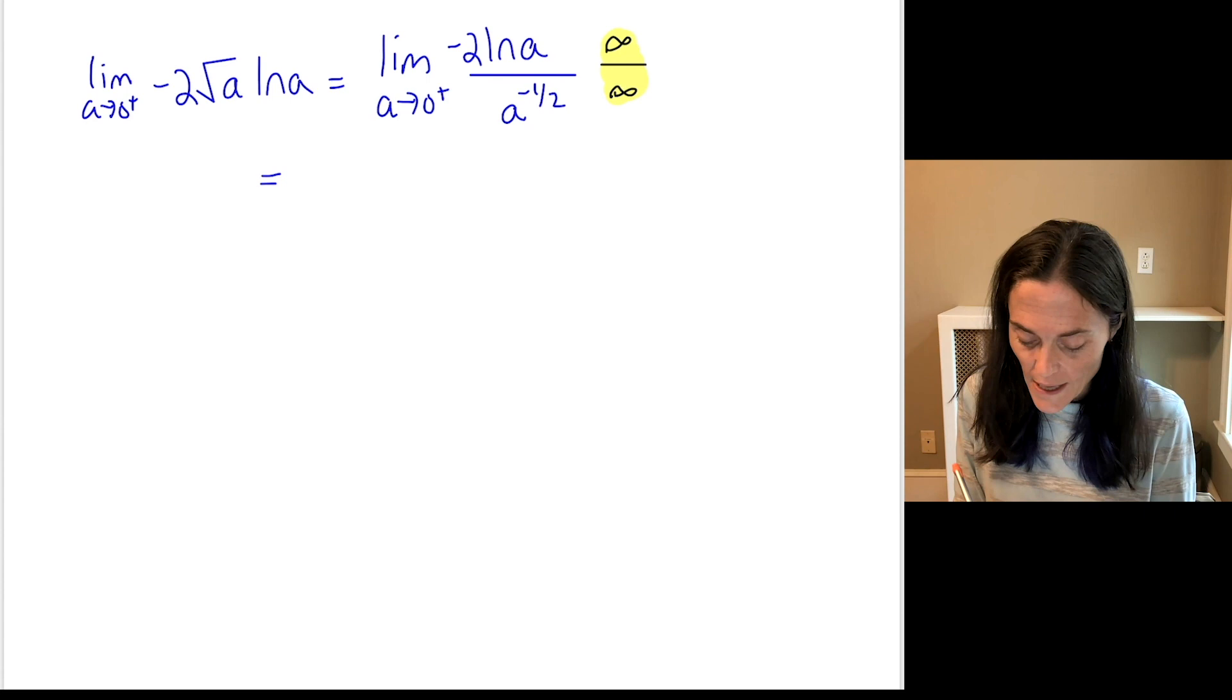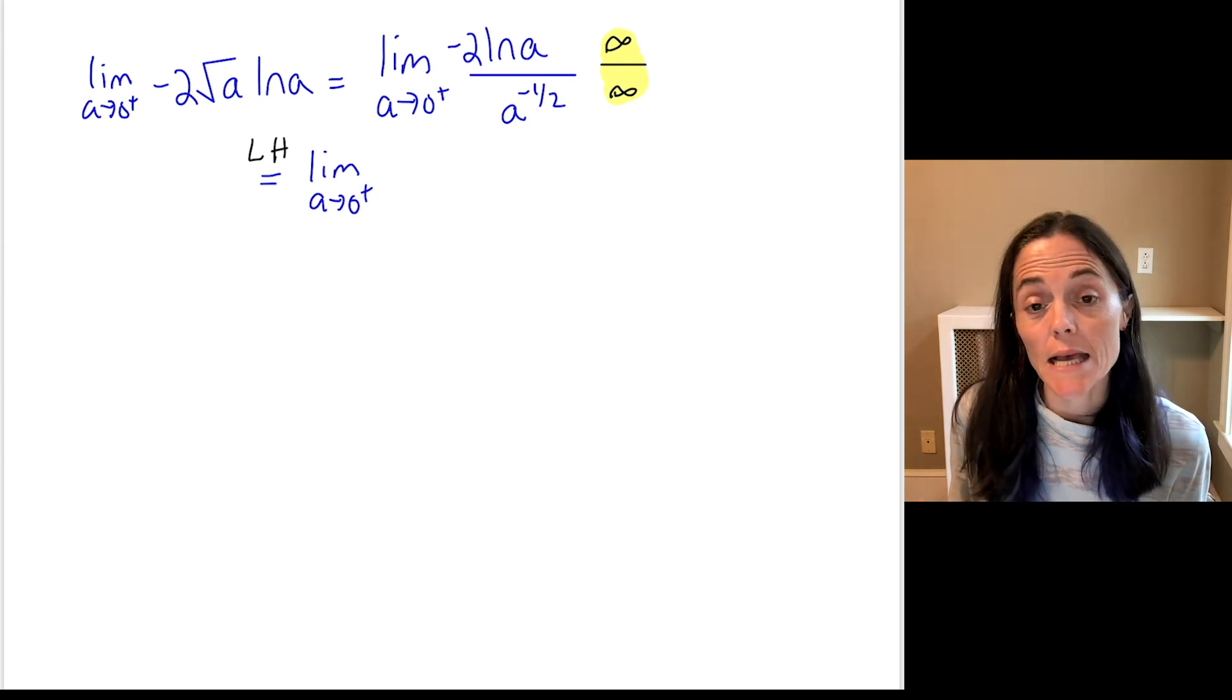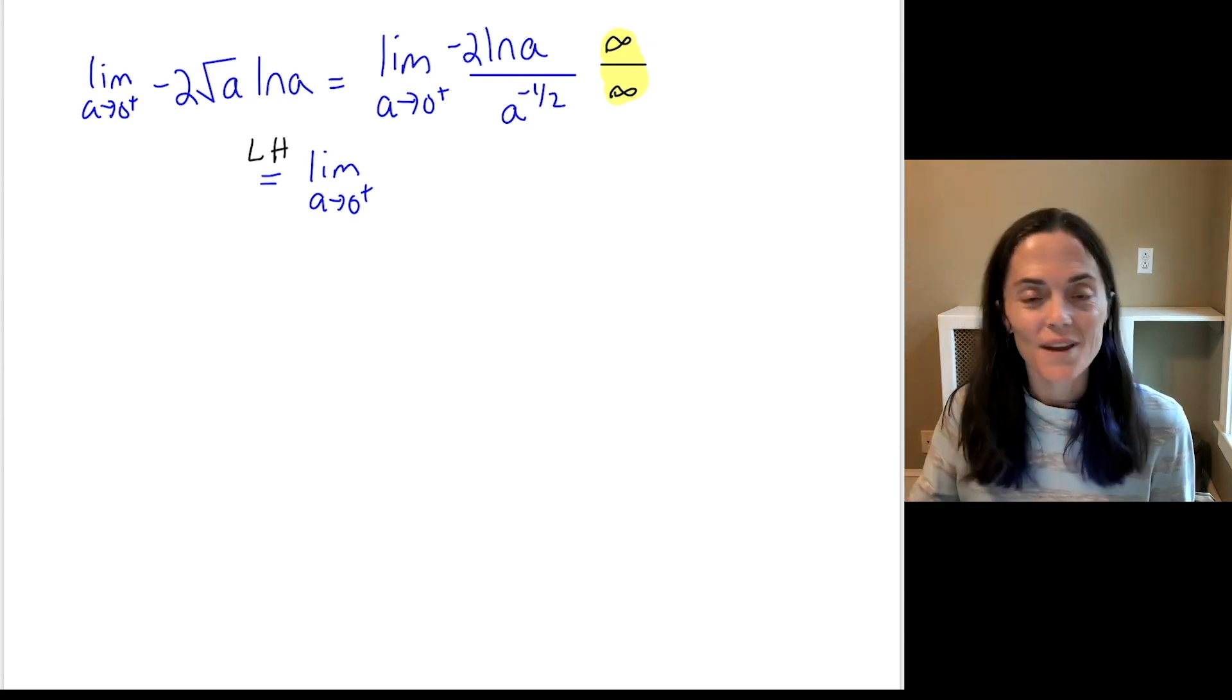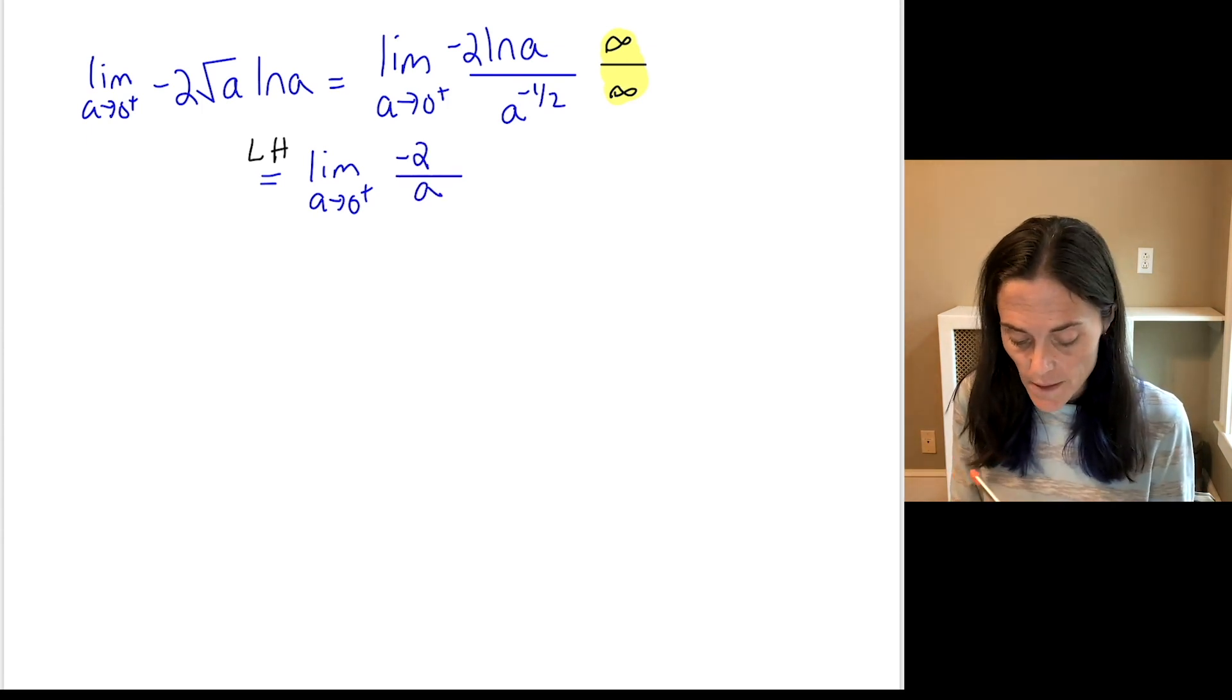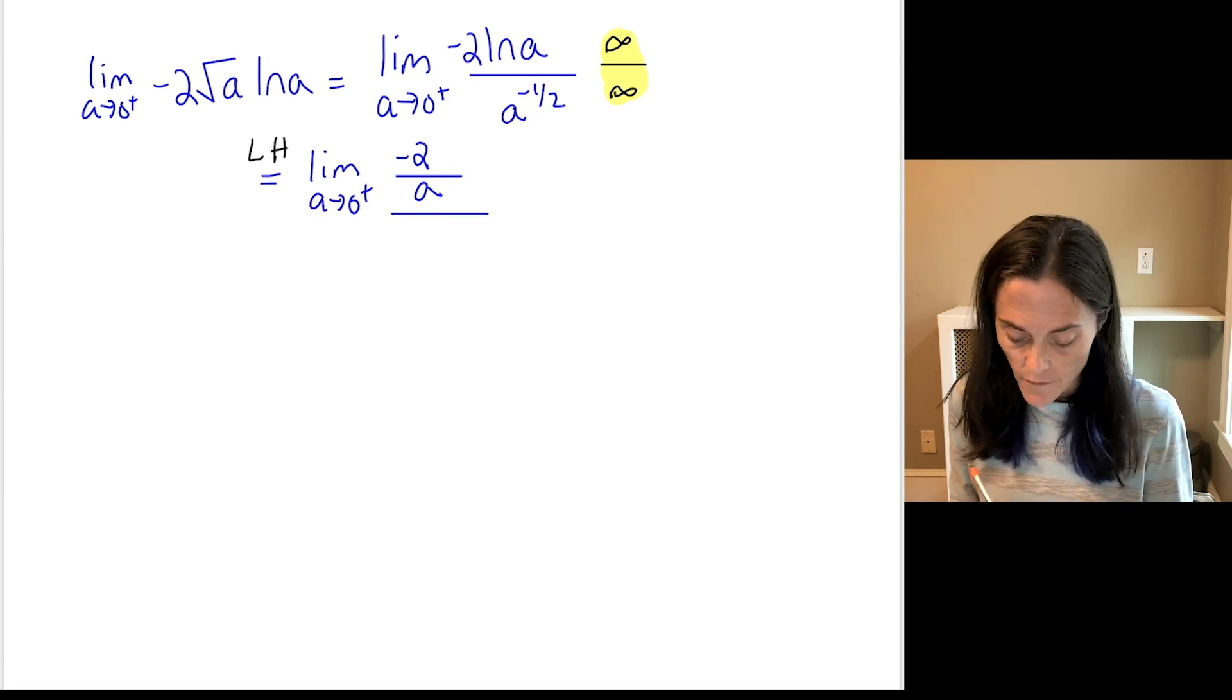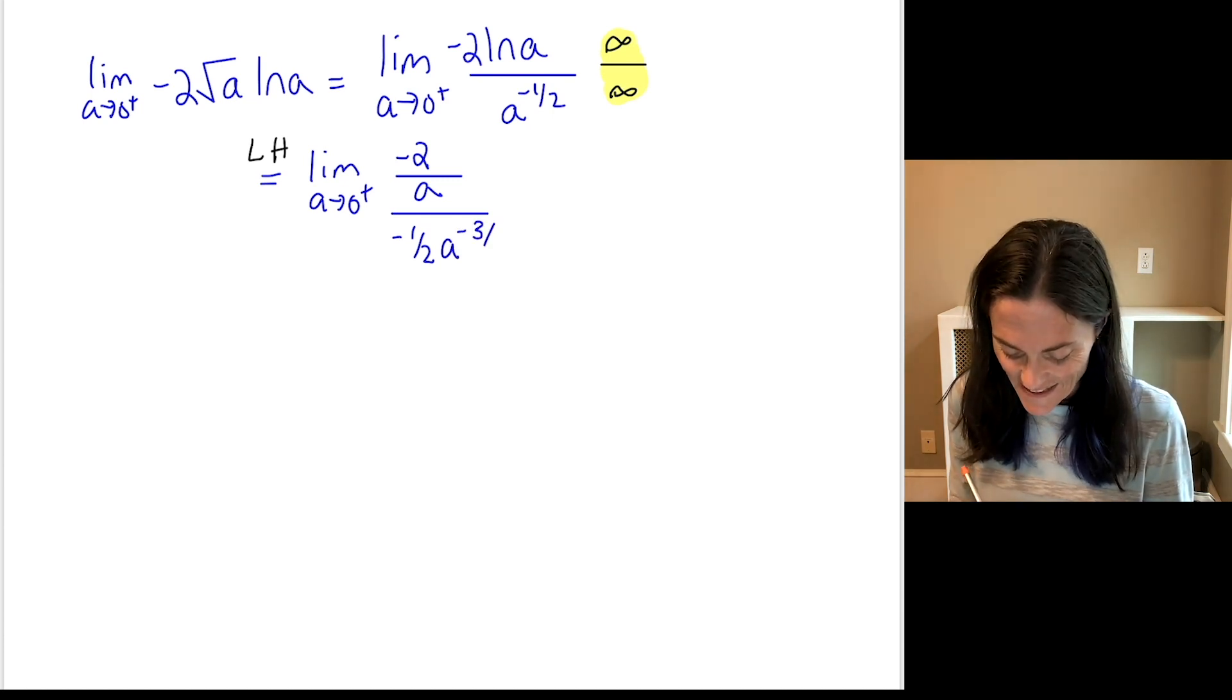So, I'll write a little LH for L'Hopital. We have a limit as a approaches 0 on the right. What L'Hopital's rule says is take the derivative on the top, take the derivative on the bottom, reevaluate the limit. So, here we have negative 2 divided by a. That's the derivative on the top. On the bottom, we have negative 1 half a to the minus, oh, 3 halves.